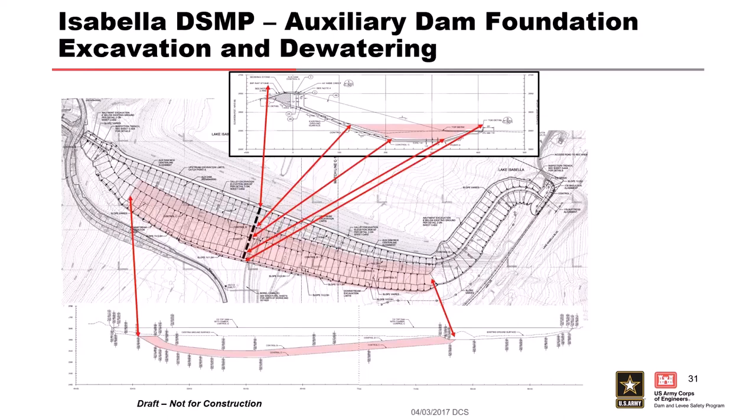One key design consideration was that we were excavating at the toe of an active DSAC-1 project with many internal erosion failure modes that had to remain operational during construction. We spent considerable effort during design developing a government-level dewatering design for the required excavation. This was ultimately a contractor-designed dewatering system, but with specified targets based on our understanding, since we had to keep this project fully functional up to a restricted pool during construction.